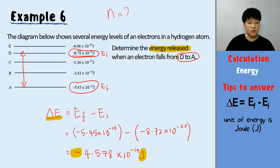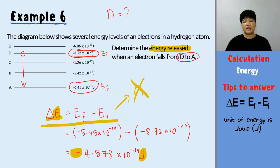We use this formula when we don't have the N value — when you don't know which energy level is involved, this is the formula to use.